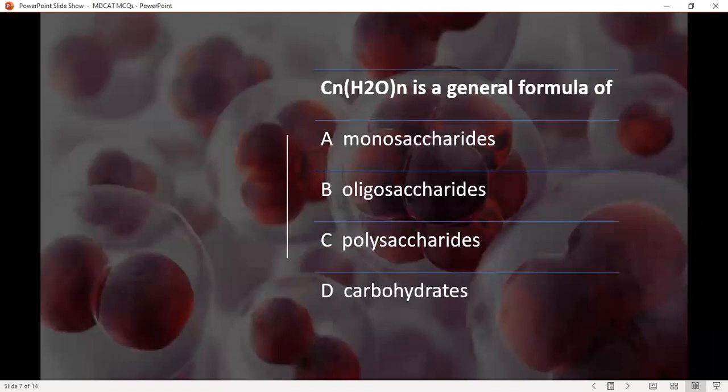C N is a general formula of option A monosaccharides, option B oligosaccharides, option C polysaccharides, and option D carbohydrates. The correct answer is option A monosaccharides.